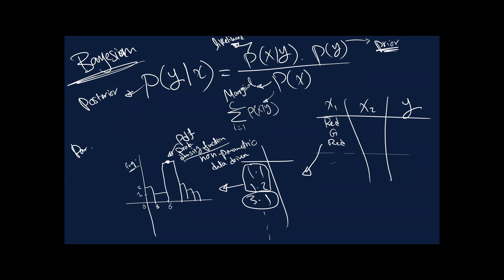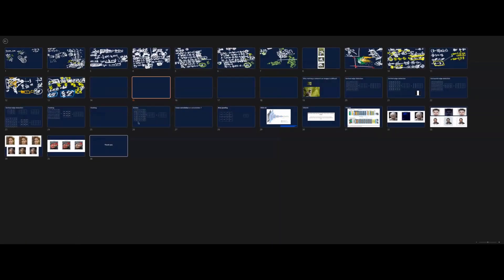What about the parametric approach? The parametric approach says: let's describe our data using something called sufficient statistics — some measures that are sufficient to describe our distribution. The main idea is to describe our data with a distribution that closely fits it. One of these distributions is called the normal distribution, or Gaussian distribution.